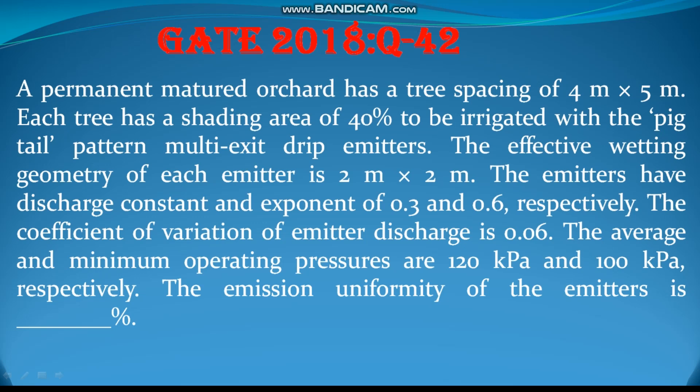Question number 42. A permanent matured orchard has a tree spacing of 4 meter by 5 meter. Each tree has a shading area of 40% to be irrigated with the pigtail petal multi-exit drip emitters. The effective wetting geometry of each emitter is 2 meter by 2 meter. The emitters have discharge constant and exponent of 0.3 and 0.6 respectively. The coefficient of variation of the emitter discharge is 0.06. The average and minimum operating pressures are 120 kPa and 100 kPa respectively. The emission uniformity of the emitter is how much percent.